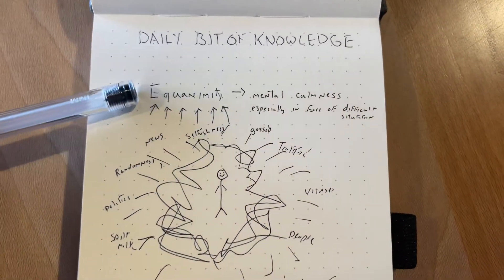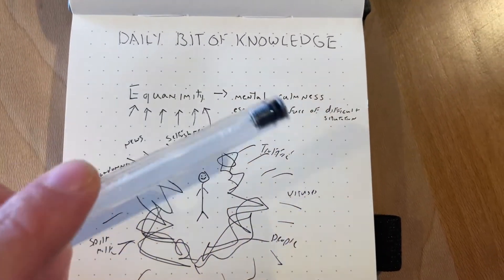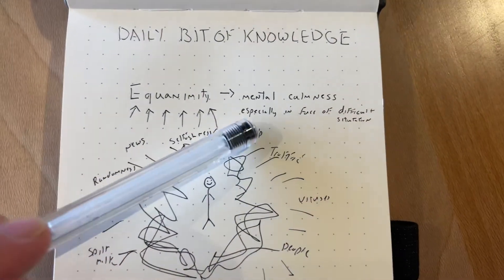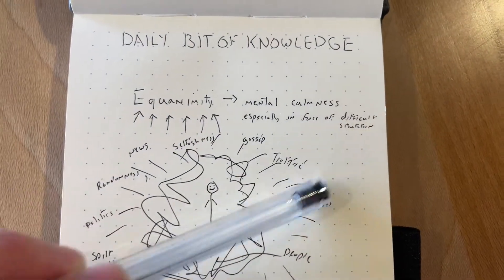All right, daily bit of knowledge: equanimity, defined as mental calmness, especially in the face of a difficult situation.